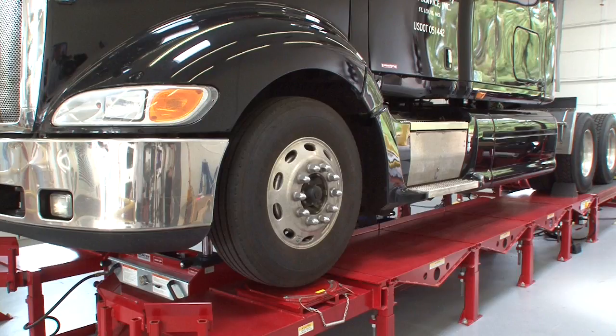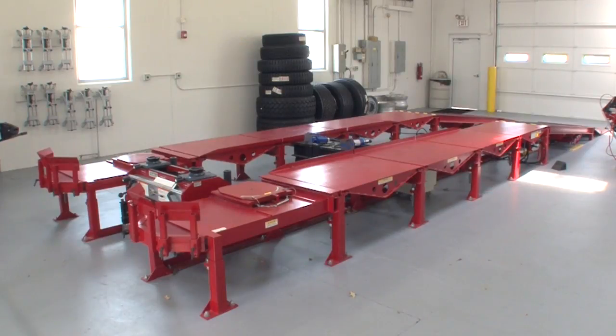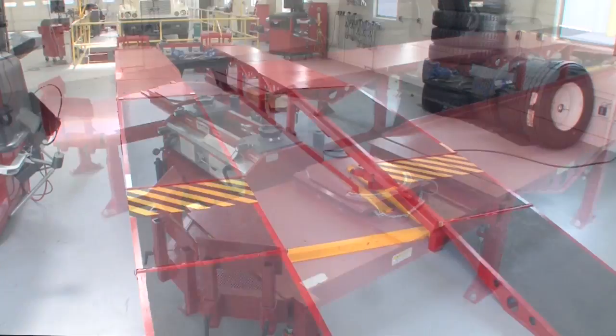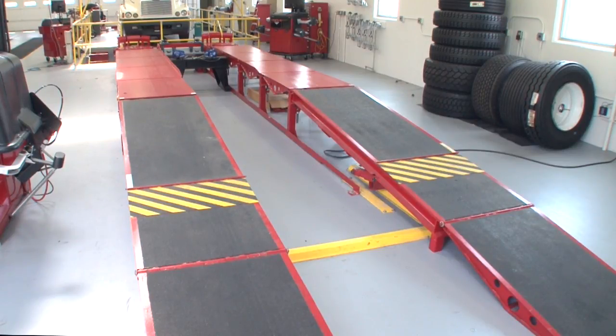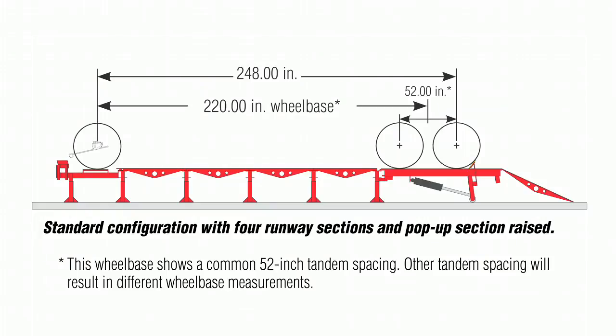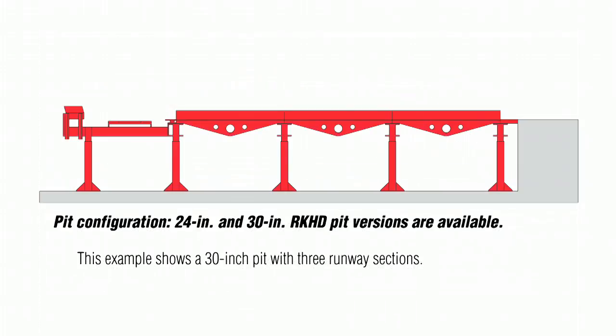For a lower initial investment, set up your bay with the surface-mounted heavy-duty power rack. This modular rack system gives you the level and stable alignment surface you need, a more efficient working height, plus sections can be added for increased wheelbase capacity. This system can also be configured in a shallow pit for custom installations.